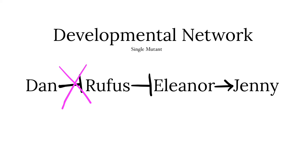In the case of a single mutant in which the Dan gene product is removed, Rufus is not repressed by Dan. Therefore, he is able to repress Eleanor by convincing her to refrain from giving Jenny a designer job. As a result, Jenny is not transcribed and has to finish high school. This creates a very angry Jenny because she is not able to pursue her dreams and drop out of high school.